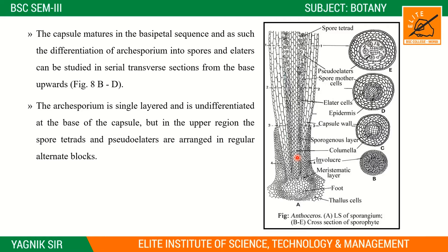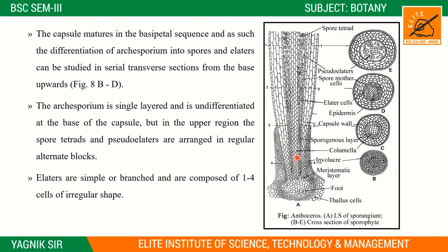In the upper region, spores and elaters are formed. Pseudo-elaters are also present in some. Elaters are simple or branched and are composed of one to four cells of irregular shape.